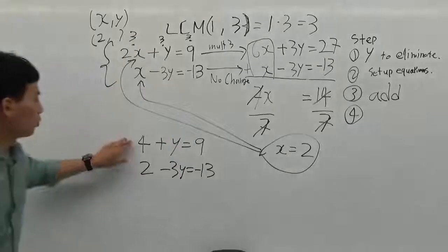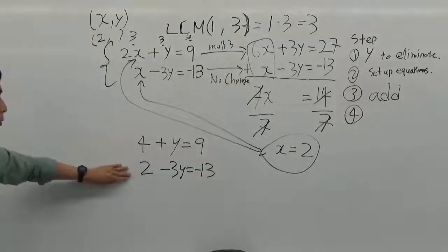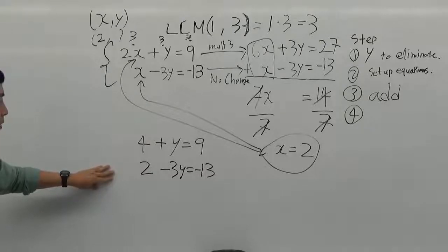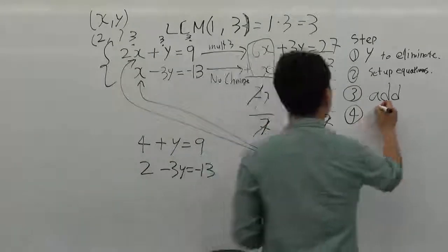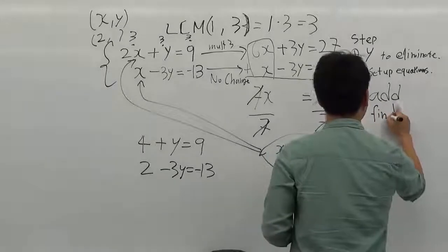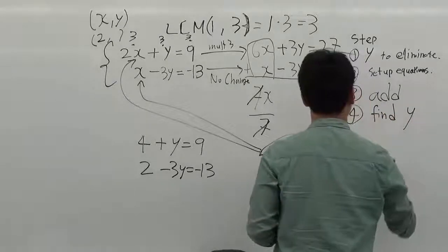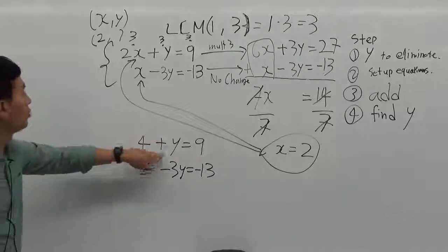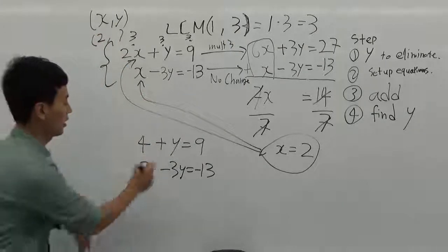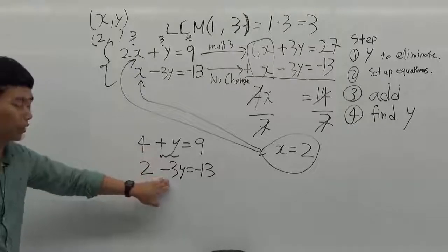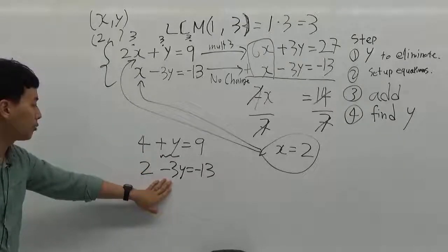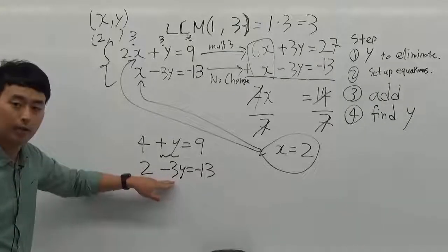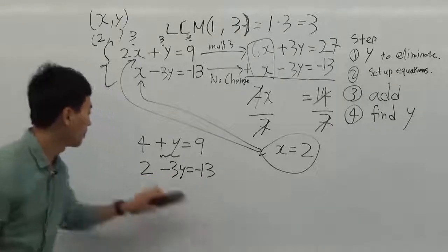We can choose one equation to find the y variable. Let's write down, find y. I'm going to choose the first equation, because we're looking for the y and it already has a positive y. But if we choose the second equation, we need more steps to get rid of the negative 3. So I'm not going to use it.